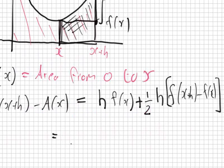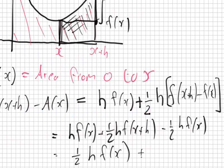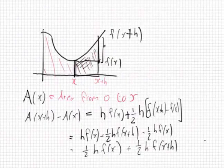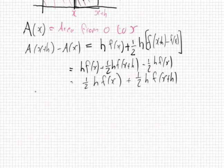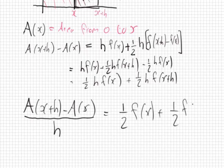Cleaning that up, we have h·f(x) plus a half·h·f(x) plus a half·h·f(x+h). Dividing everything by h gives: [A(x+h) − A(x)] / h = a half·f(x) + a half·f(x+h).